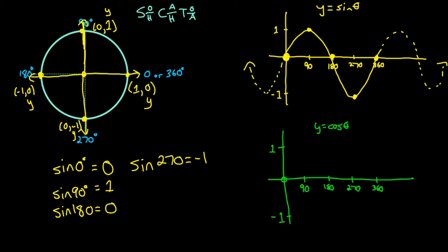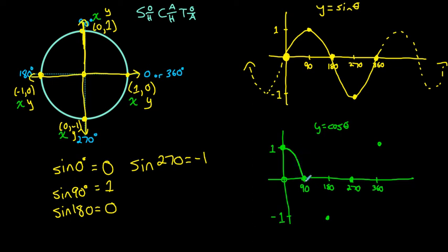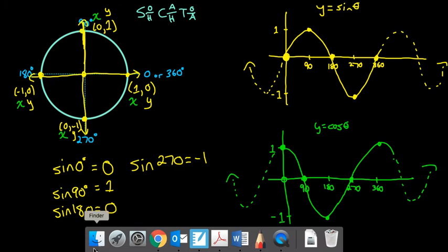If we want to graph cosine, remember cosine equals the x-coordinate of every point that intersects the unit circle. At 0 degrees, the x-coordinate is 1, so the cosine function starts at 1. At 90 degrees, the x-coordinate is 0. At 180 degrees, the x-coordinate is negative 1. At 270 degrees, the x-coordinate is 0. At 360 degrees, we're back to an x-coordinate of 1. This forms a smooth curve, and cosine also oscillates between 1 and negative 1 every 360 degrees because it's a periodic function.